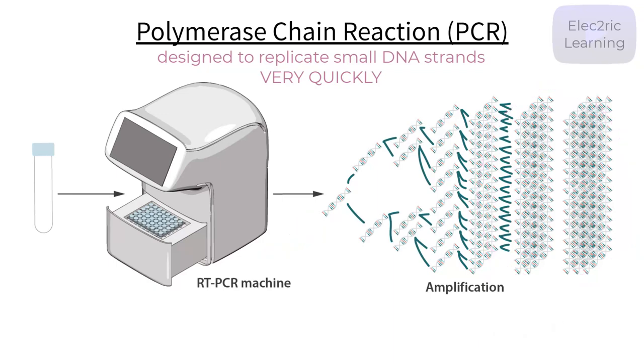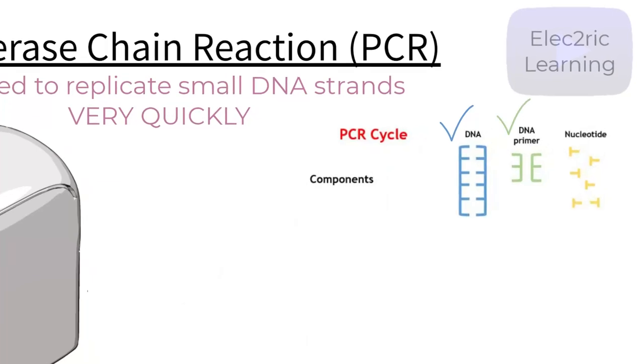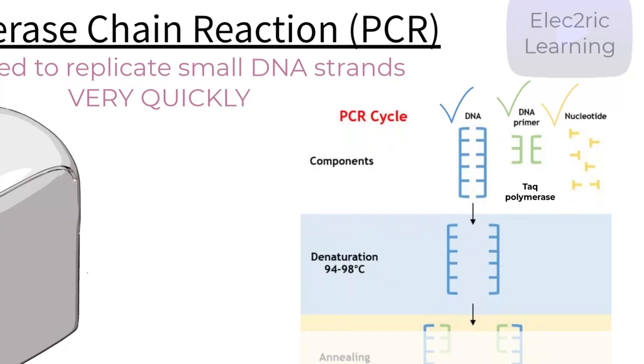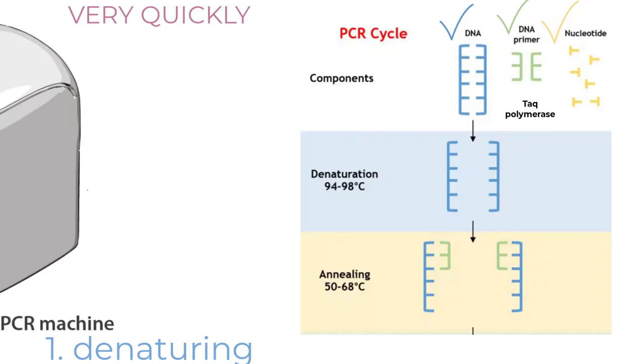This process of running a polymerase chain reaction involves three steps: denaturing, annealing, and extending. This, in a sense, copies the process of DNA replication, because after all the point is to replicate these strands. First, the DNA strand, primers, free-floating nucleotides, and an enzyme called taq polymerase are added to the thermal cycler, which is the PCR machine. During the denaturation phase, the sample is heated up to around 90 degrees Celsius, which will separate the hydrogen bonds that hold the two backbones of the DNA strand together. Next, for the annealing phase, the sample is cooled down to around 55 degrees Celsius, which allows the primers to connect to the DNA sample at the specified location.